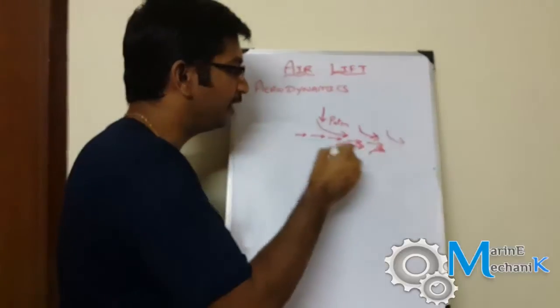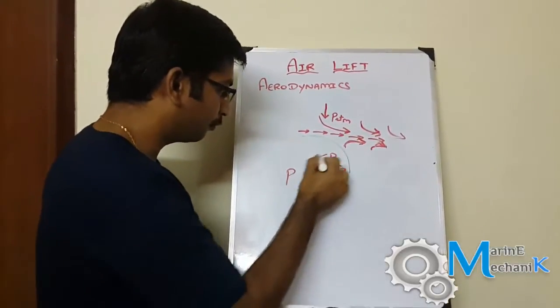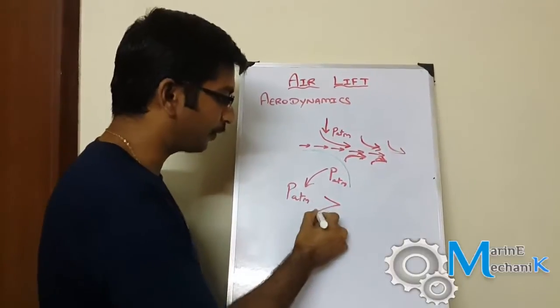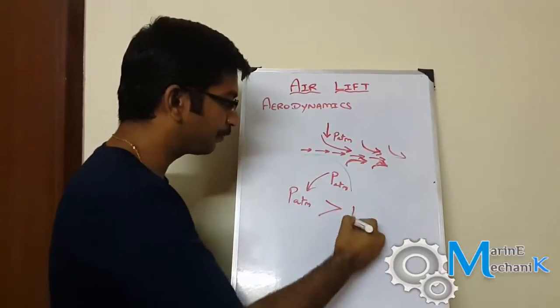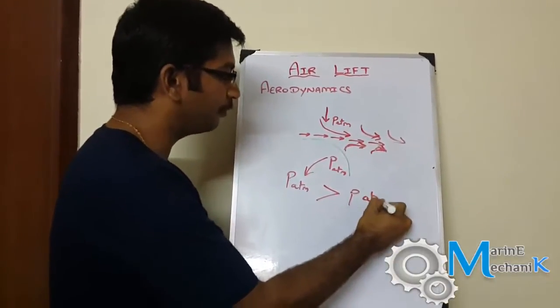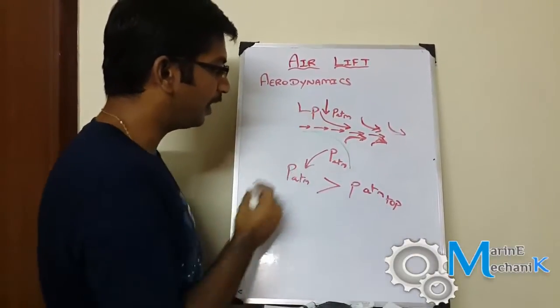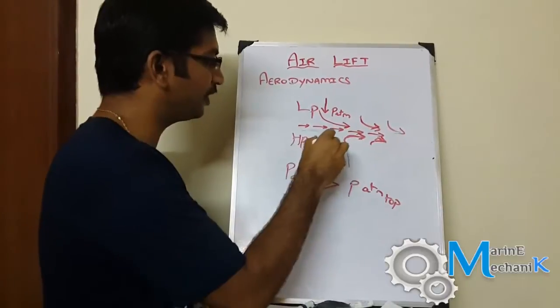So the atmospheric pressure below the paper is greater than the atmospheric pressure on top of the paper. Here is the low pressure zone and here is the high pressure zone, which tends to lift the paper up.